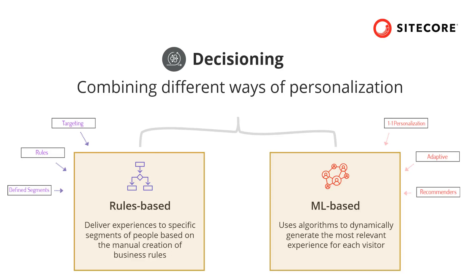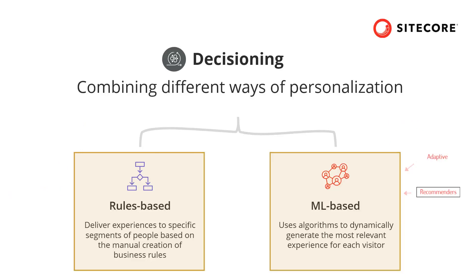For example, we can create rules to serve users from a specific geolocation a specific experience or content or offers, and at the same time utilize machine learning and adaptive functionalities to serve real-time context — such as if we understand that the user wants to travel to a specific destination, we can serve them with offers for those destinations.